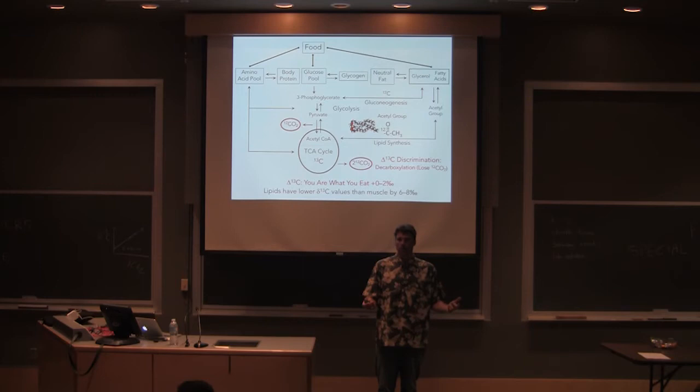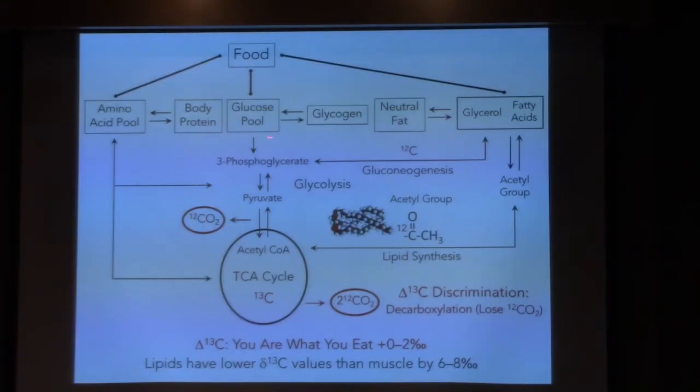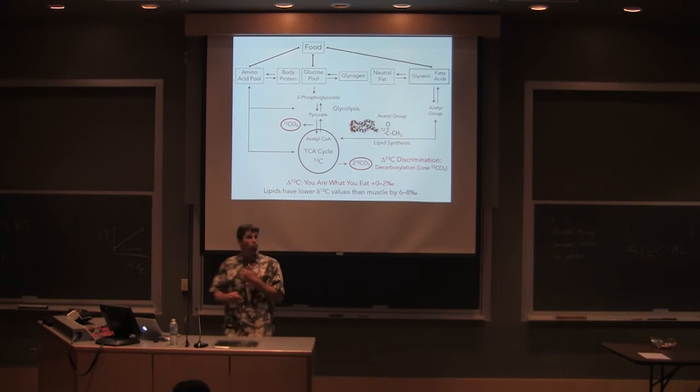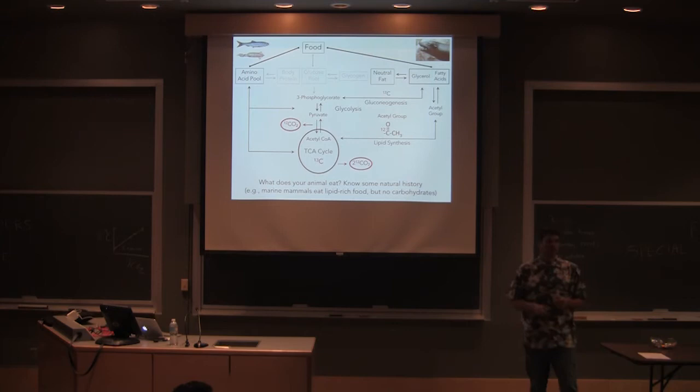We don't do that as much because our diets are dominated by carbohydrates. But if I was a seal, there ain't no carbohydrates to eat in the ocean, but there's a lot of fat. I can take that fat and convert it into glucose via gluconeogenesis. When you do that, you're taking that isotopic signature of the fat and making a glucose pool that is isotopically depleted.